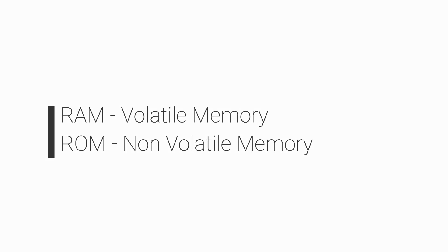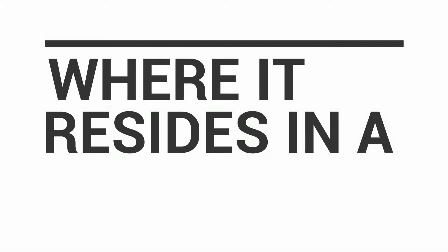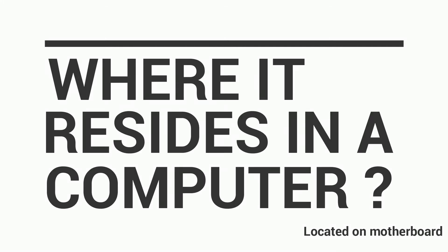Where does memory reside in a computer? If you open up your CPU, you will see a heatsink at the top of the motherboard, and your RAM slots will be right next to it — either two or four memory slots. ROM is located on the motherboard as a small chip.